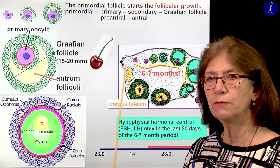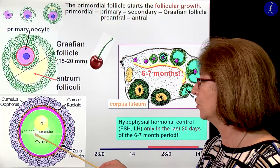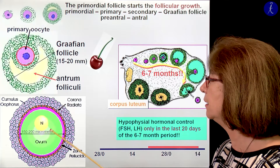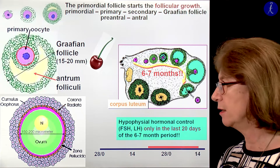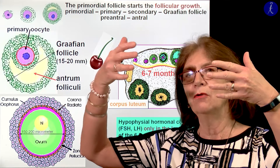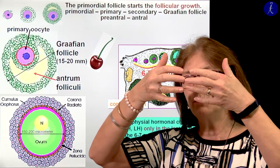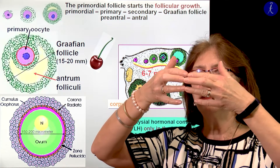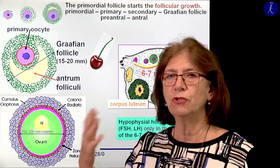Through the development of this follicle, the oocyte also changes — it grows to a diameter of 150 to 200 micrometers. On the surface there is the zona pellucida, which is a glycoprotein layer. The corona radiata has an important role: from the surface of the oocyte there are little protrusions, and the innermost layer of granulosa cells — the corona radiata cells — also have little processes. These bridge over the zona pellucida and contact each other with gap junctions. Through these connections, nutrients are provided for the growing oocyte.